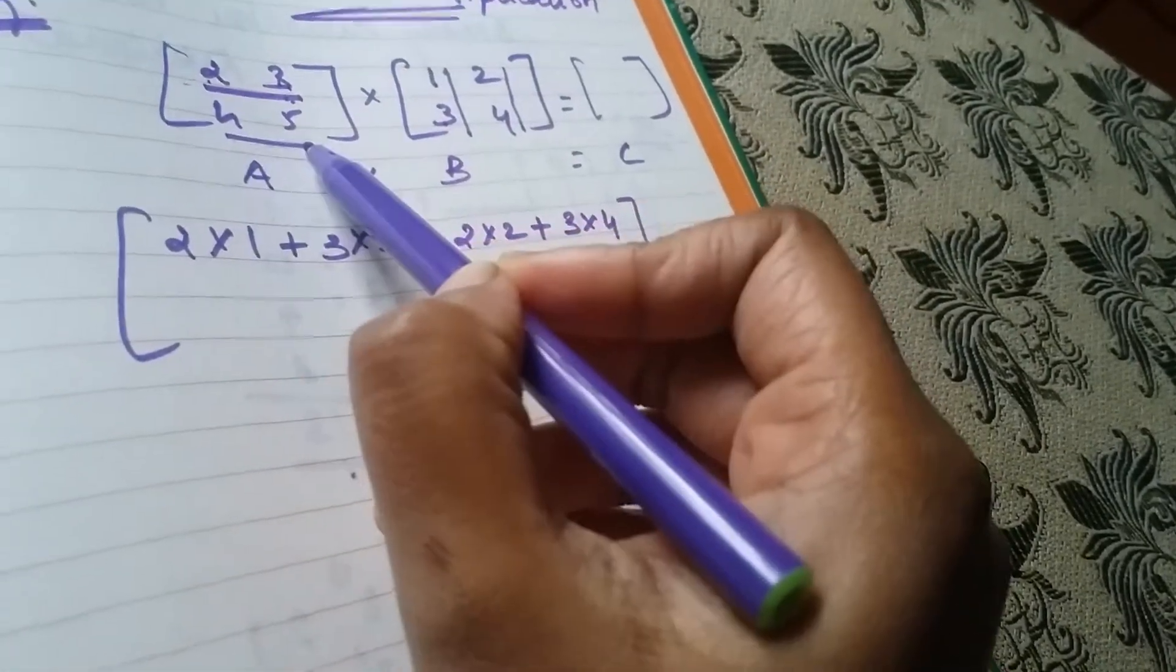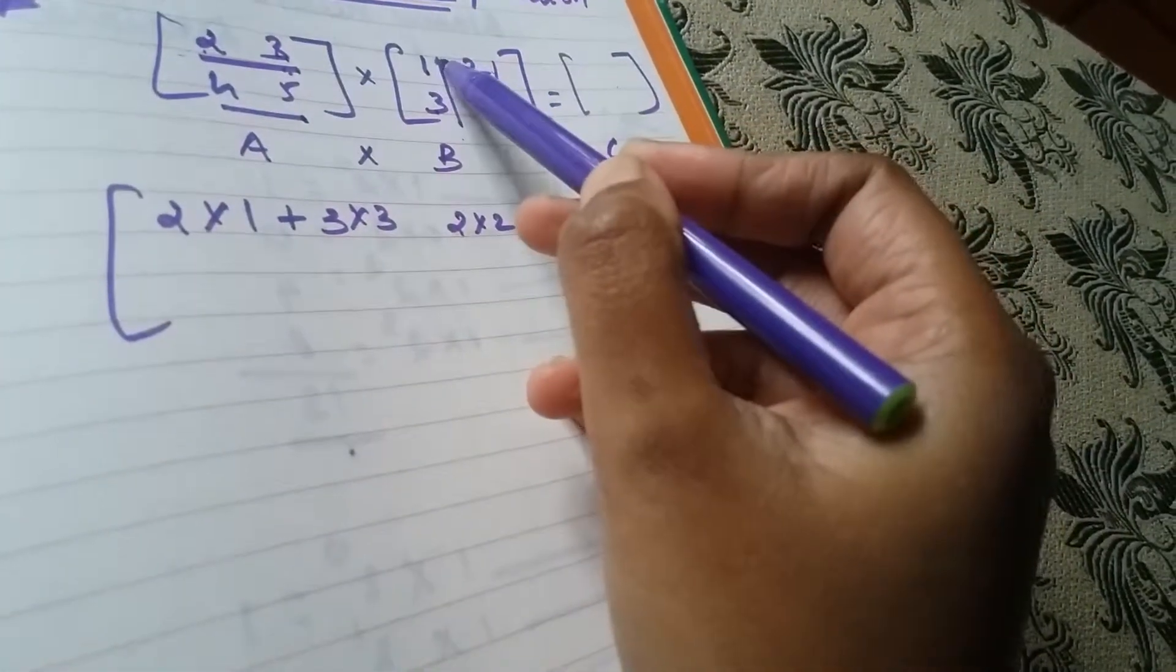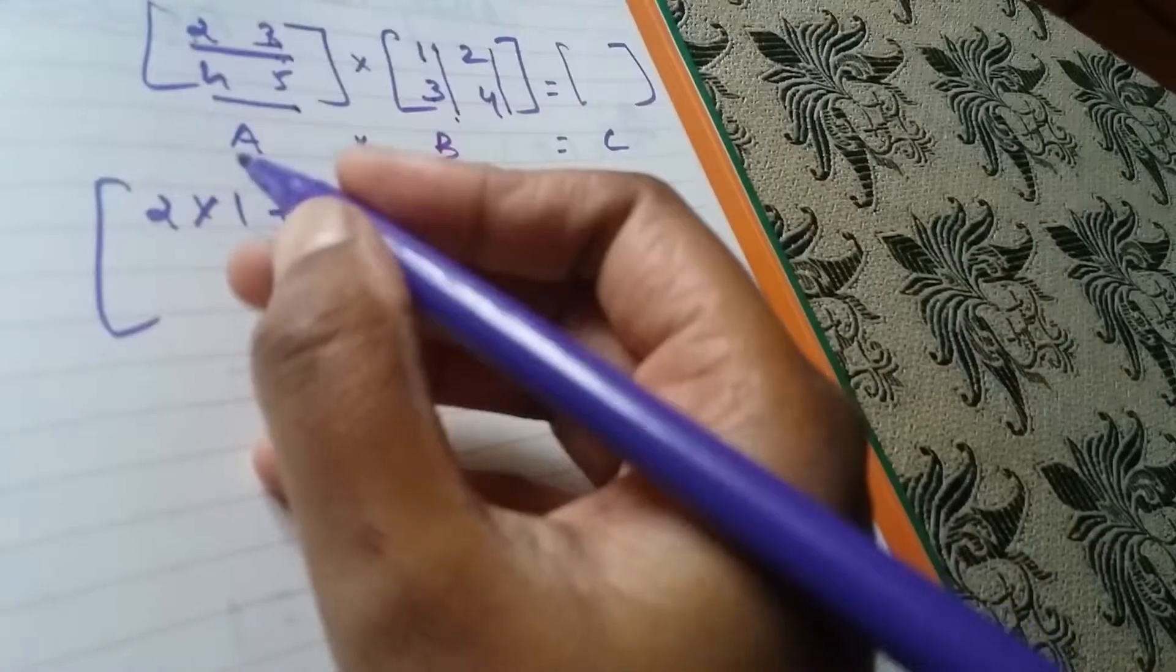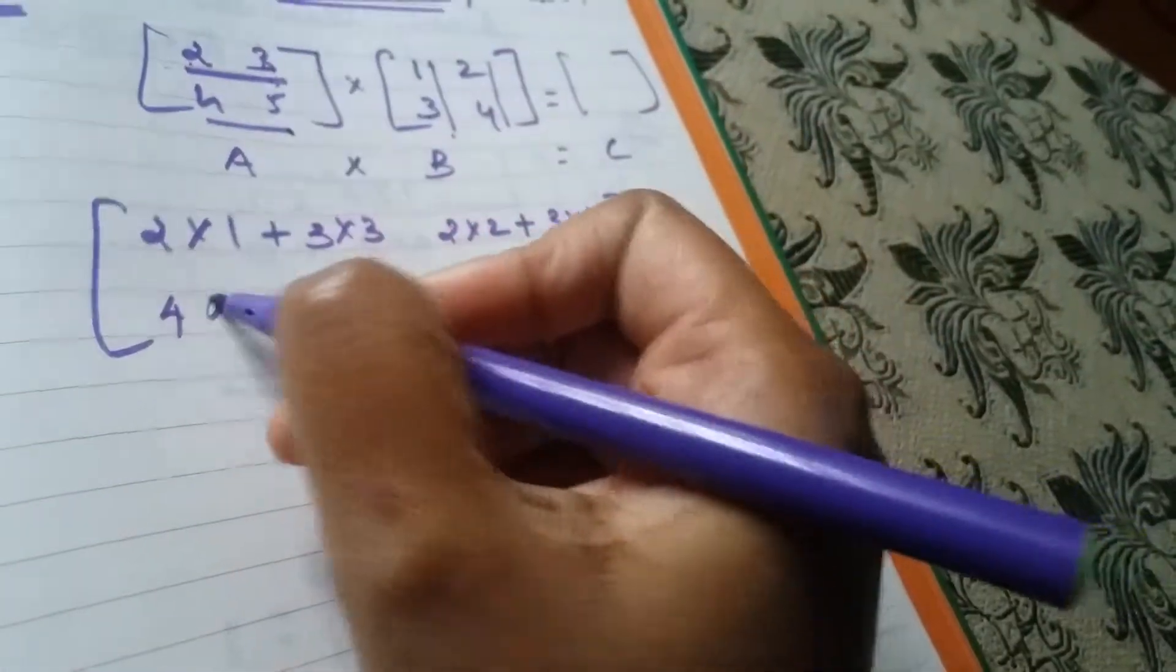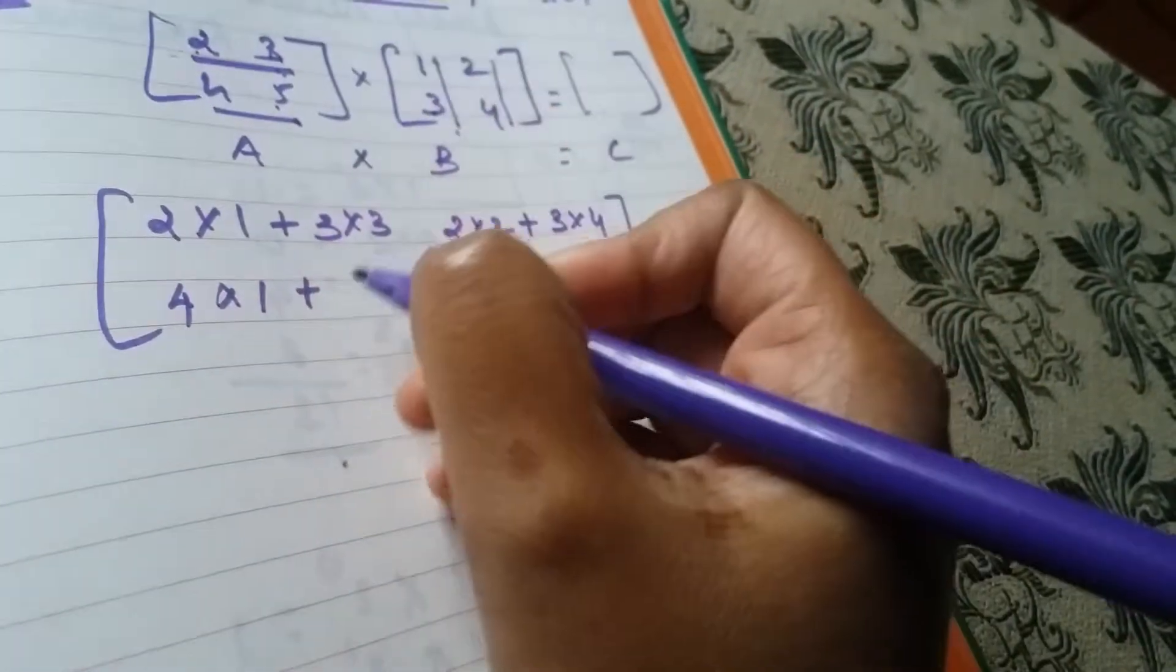Next, A second row. A second row, B first column. A second row, 4. B first column, 4 times 1 plus 5 times 3.